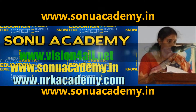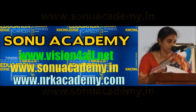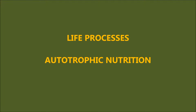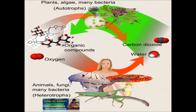Hello everybody, this is Nanduram and we are from SONU Academy. Today we are going to discuss about autotrophic nutrition. Children, in the earlier classes you learned that all living organisms require a continuous supply of carbon-containing compounds for growth and for building their body structures. Let us see how autotrophic nutrition helps for their growth and for building their body structures.